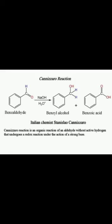Today we will discuss what is Cannizzaro's reaction. When two molecules of aldehyde or ketone not having an alpha hydrogen atom undergo a self-disproportionation reaction — that is, a self-oxidation or reduction process — in the presence of aqueous alkali like 50% NaOH or 50% KOH, it gives a primary alcohol as a major product and another product.